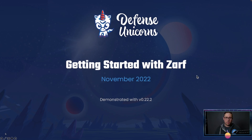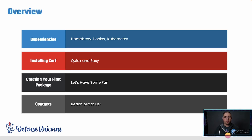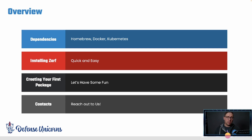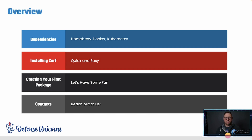Here's our overview for today. First, we're going to talk about dependencies for getting this up and running — these are not specific to XARF, but specific to this process. Next, we'll do the quick and fun way of installing XARF. If you're in an air gap or highly secured situation, this doesn't apply to you — this is for getting you as a developer up and running. Then we'll create our first package in XARF, run it, and I'll show you some contact information for how to get a hold of us as you work with XARF.